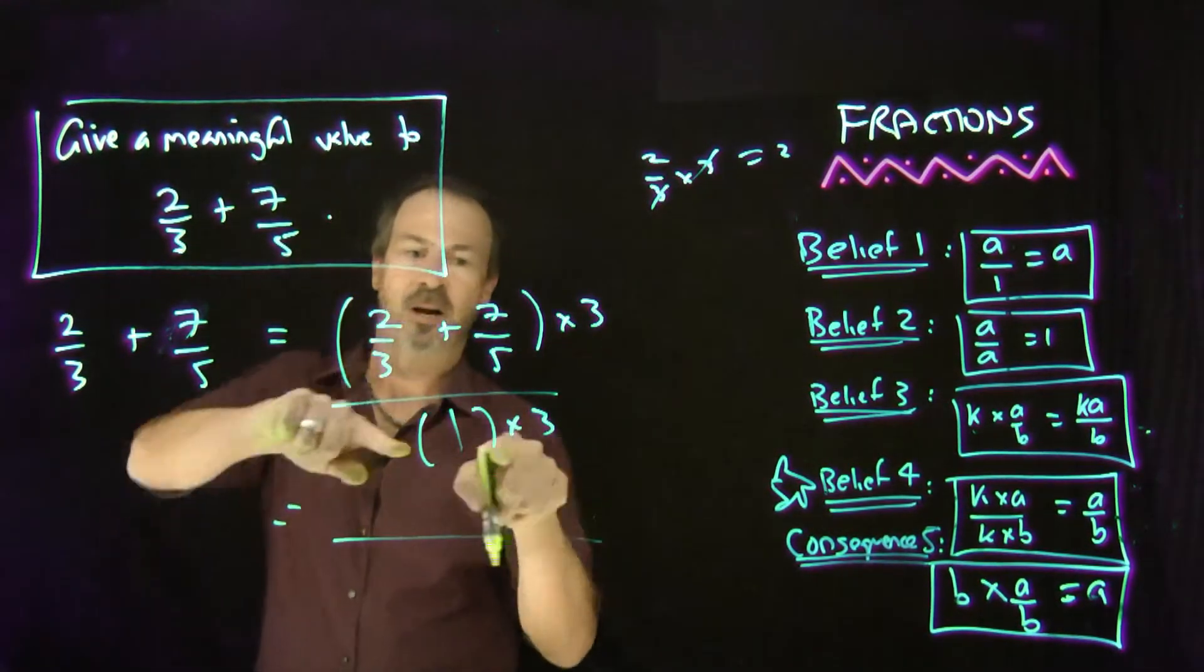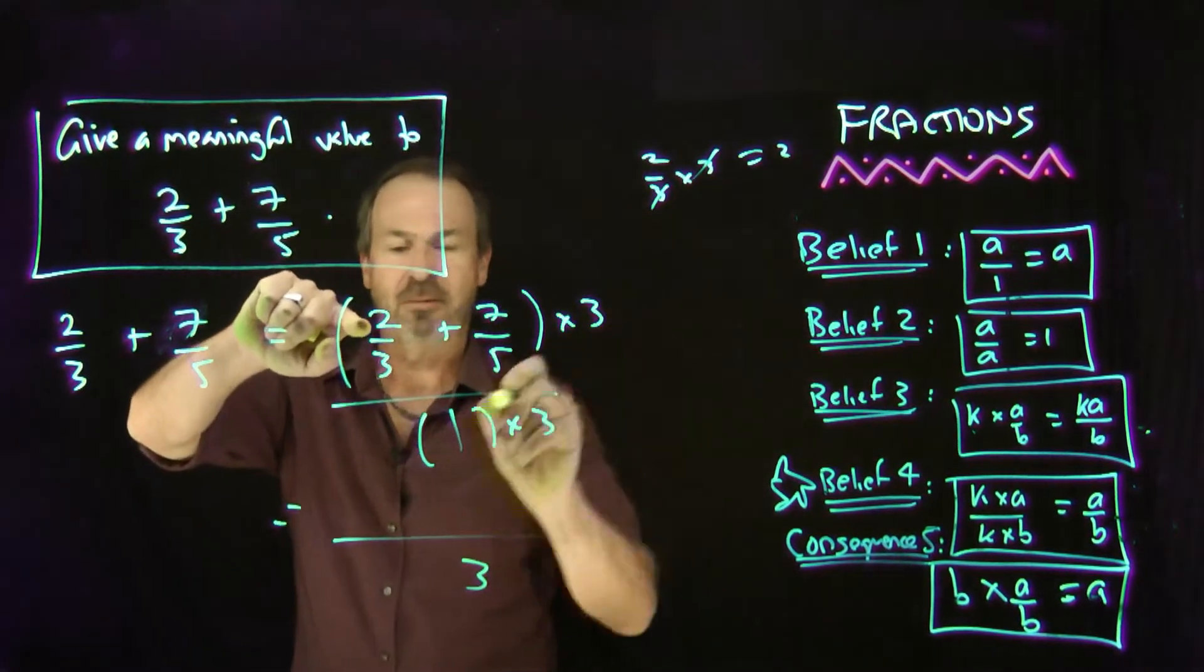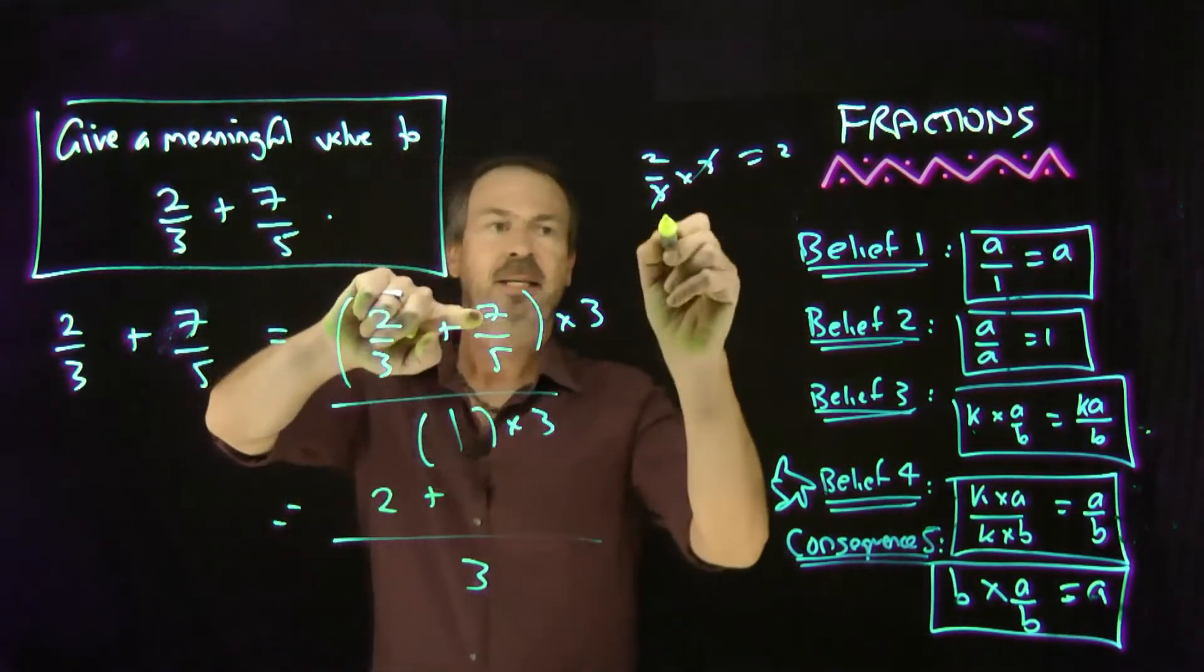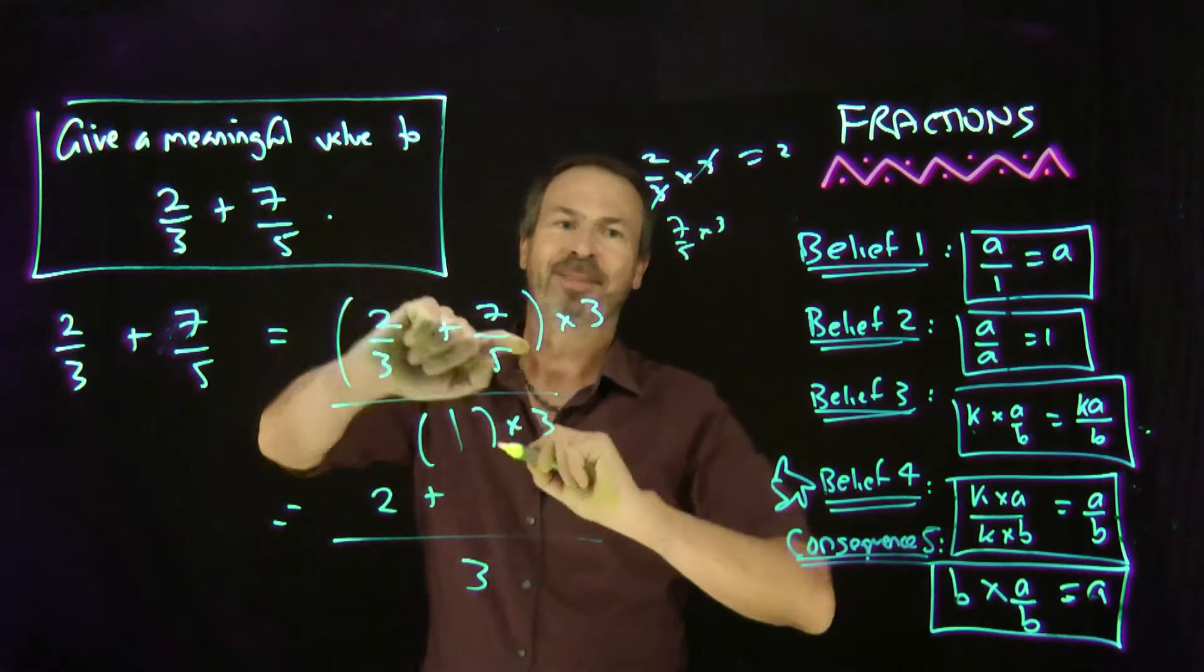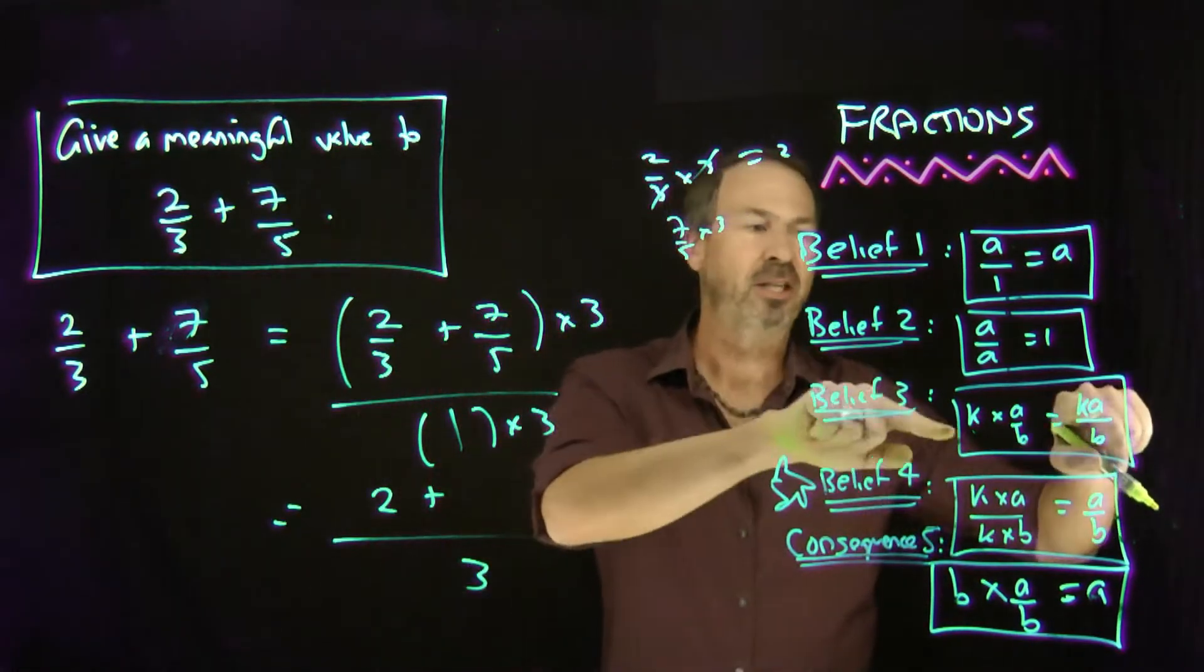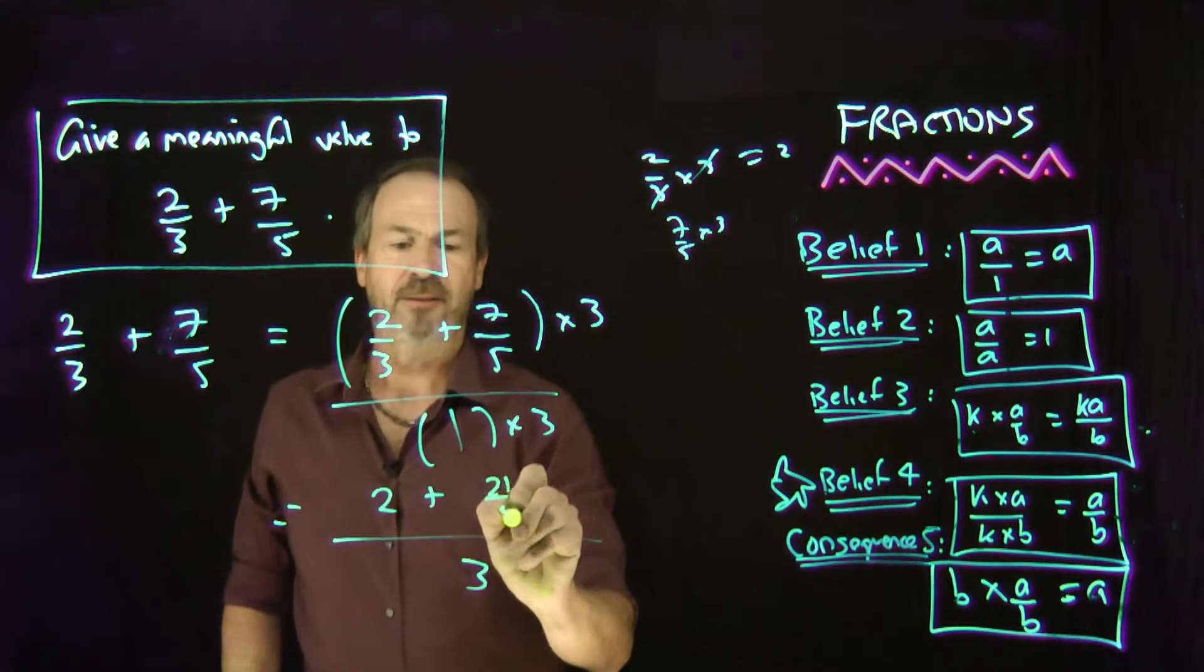The top line, here goes. Oh, the bottom line is fine. 3 times 1, that's just 3. 2/3 times 3 is 2 plus 7/5 times 3. Oh, I can't do much with that one. That's going to be just the numerator gets multiplied plus 21/5.